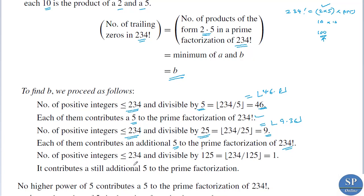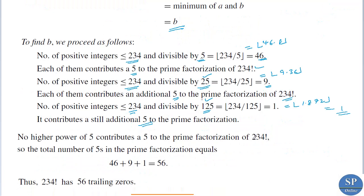Next, integers less than or equal to 234 divisible by 5³ = 125: floor(234/125) = floor(1.872) = 1, contributing one additional 5. For 5⁴ = 625, that power is greater than 234, so floor(234/625) = 0. Adding these up: 46 + 9 + 1 = 56. Therefore 234 factorial has 56 trailing zeros.